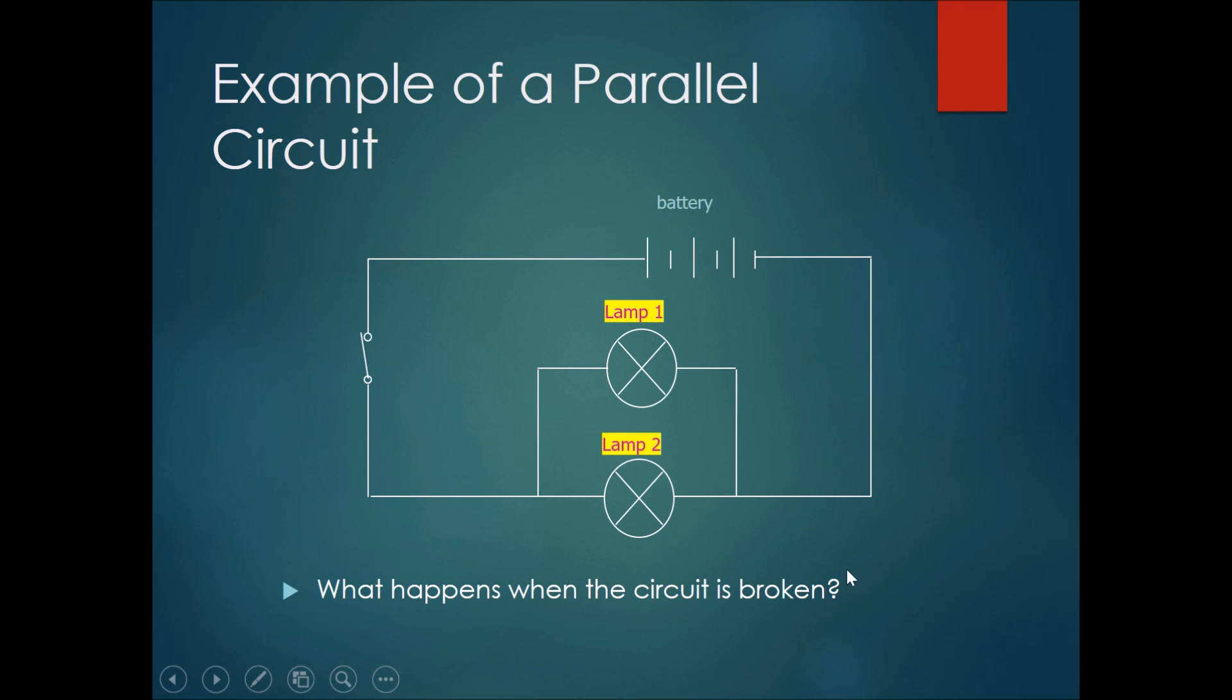So for example, what happens when the circuit is broken? Let's say if it breaks over here, then the current would flow through, flow over here and it will flow through lamp two and go back to the battery. So lamp one may not light up because this circuit part is broken, but lamp two will still work.